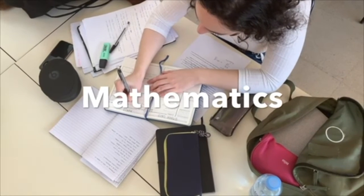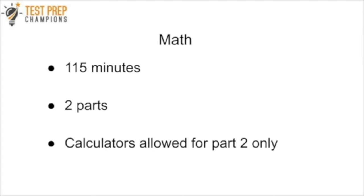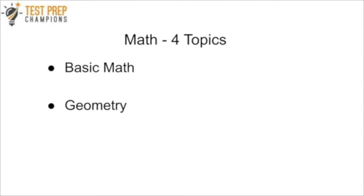Now let's talk about the math section. You'll have 115 minutes total, and there are two different parts. For the first part, you won't be able to use a calculator, but you can for the second part. The first part is very short, so you'll be able to use your calculator for most of the test. They'll give you a formula sheet to use on your computer during the test. The four topics on the math test are basic math, geometry, basic algebra, and graphs and functions.